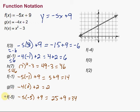Function notation allows us to know which function we used, what value we put in, and what it equals when it comes out. We can also talk about independent and dependent variables. The independent variable is what we put in — in these cases, the x — and the dependent is what we get out: the f of x, g of x, or h of x. Those are the dependent variables.